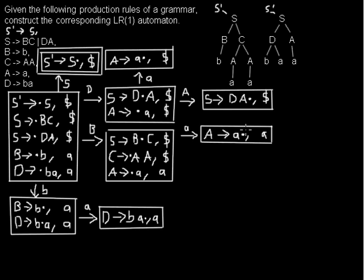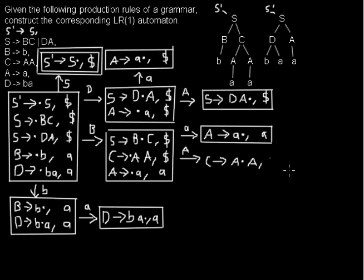We've seen the full right-hand side of the A rule. We go back to the previous state and saw the whole A, so we're allowed to move the dot over that A. When we got the whole A, we go to the state where we saw the first A, keeping the dollar symbol.